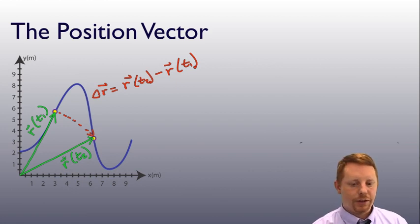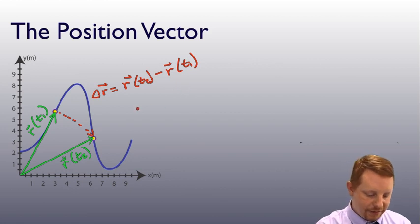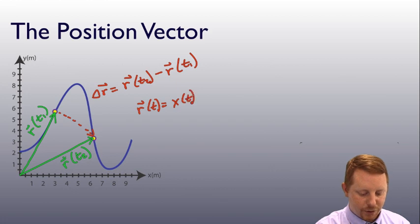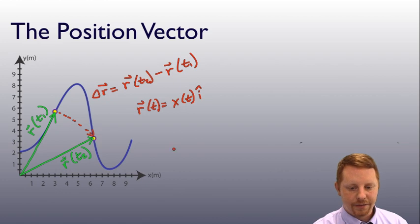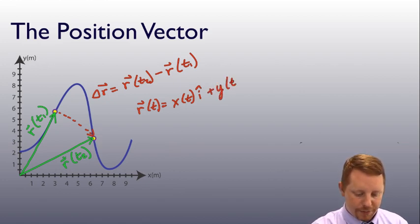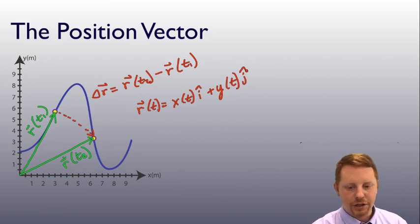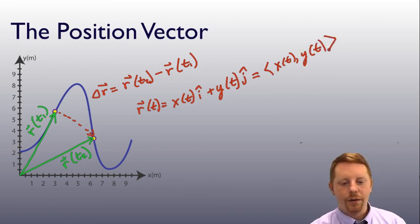Further, if we wanted to write this in terms of unit vector notation, we could write it as the position vector as a function of time is equal to the x component as a function of time times the unit vector in the x direction i hat plus the y position as a function of time times j hat. Or if you like bracket notation, that could be x of t comma y of t.